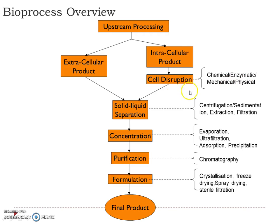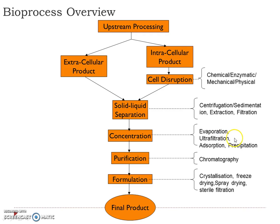After separating the product from the cell, we go for solid-liquid separation — for both intracellular and extracellular products — using techniques like centrifugation, sedimentation, extraction, and filtration. Once solid-liquid separation is done, we have to concentrate the main product using techniques like evaporation, ultrafiltration, adsorption, or precipitation.